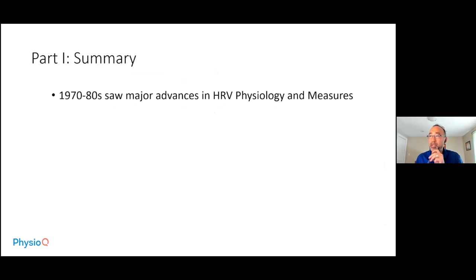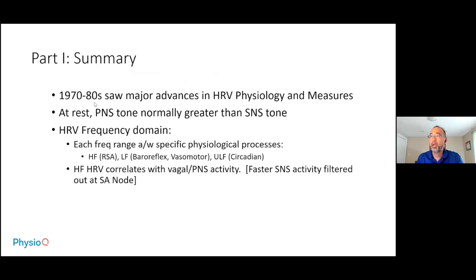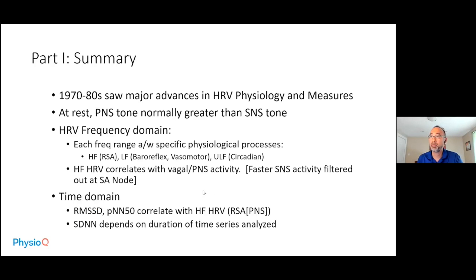To summarize part one: the 1970s and 80s saw major advances in heart rate variability physiology and measures. At rest, parasympathetic nervous tone normally exceeds sympathetic nervous system tone. In the frequency domain, high frequency is associated with RSA and the parasympathetic nervous system; low frequency is associated with baroreflex and vasomotor tone, having both parasympathetic and sympathetic components; and ultra-low frequency relates to hormonal or circadian rhythms. For time domain measures, RMSSD and pNN50 correlate with high-frequency HRV and represent parasympathetic activity, while SDNN depends on the duration of the analysis.